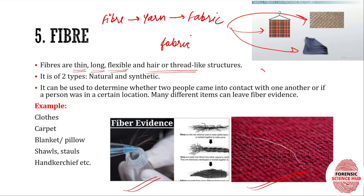Fibers can act as evidence based on Locard's principle of exchange — when two persons wearing clothes come in contact with each other, they exchange fibers. When cloth pieces are minutely examined, we can determine who a person has come in contact with by comparing the fibers. Fibers can be natural — such as animal fibers like wool and silk, or plant fibers like cotton and jute — or synthetic, including nylon, polyester, acrylic, and rayon.